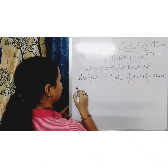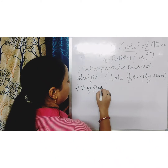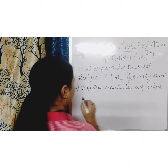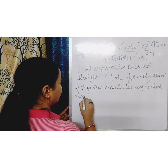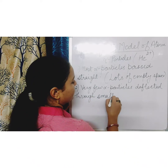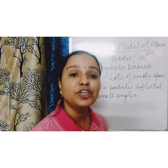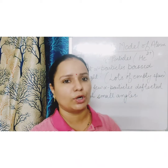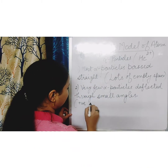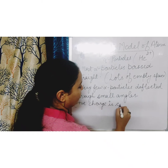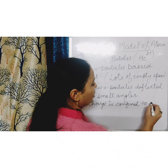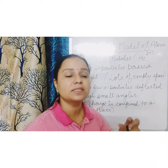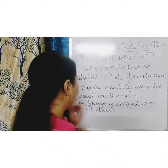Inference number two: very few alpha particles deflected through small angles. That showed that the positive charge inside the atom is located in a very small space. This inferred that the positive charge is confined to a small area inside the atom.